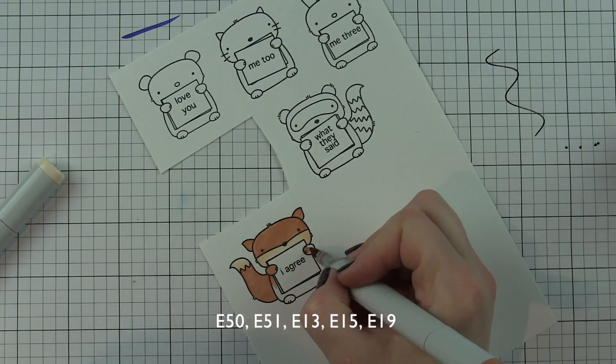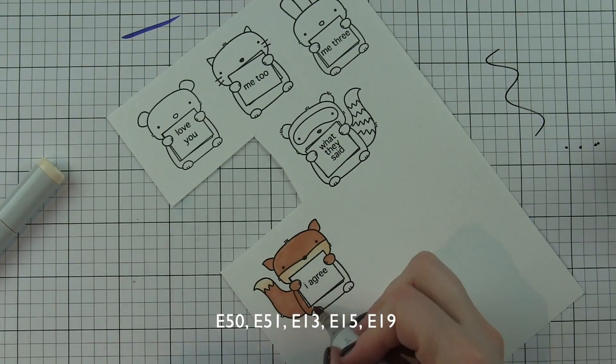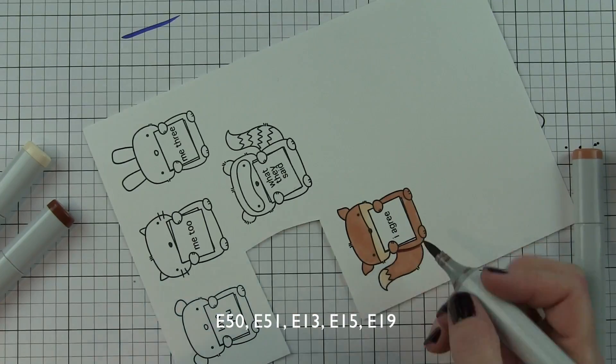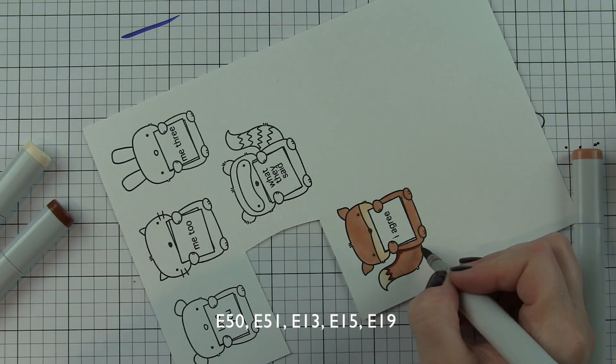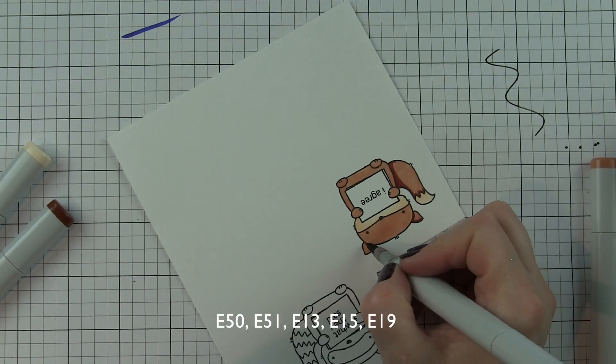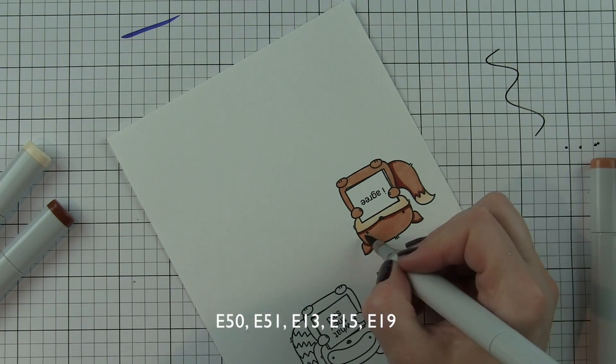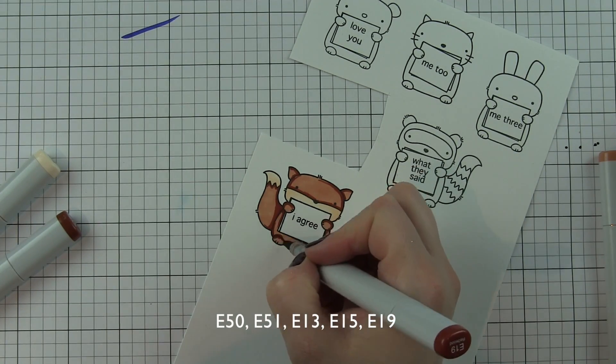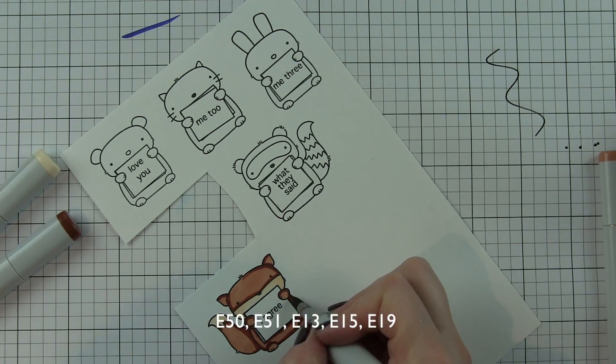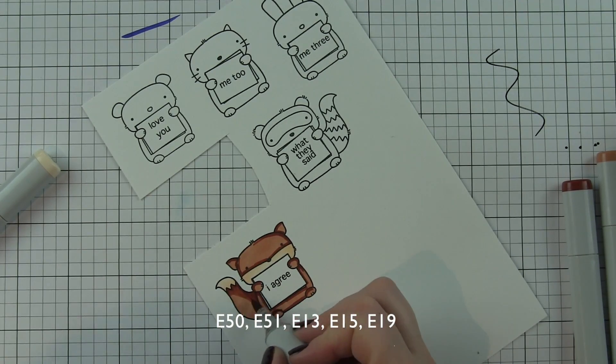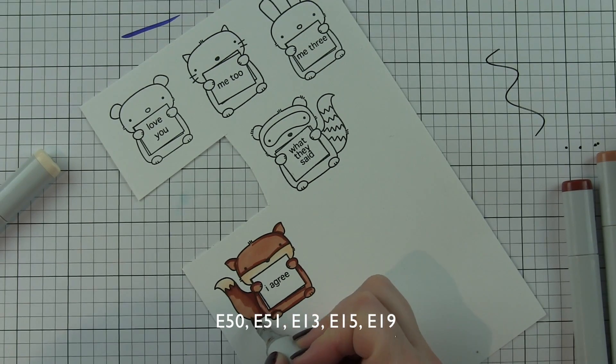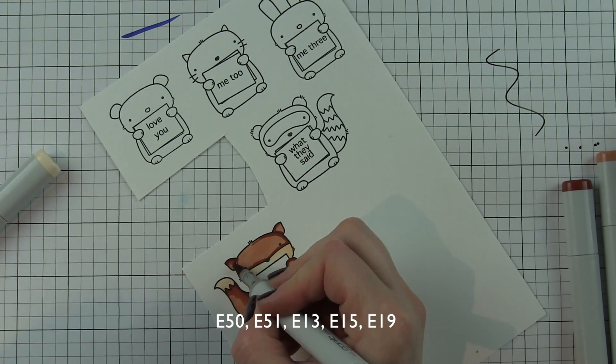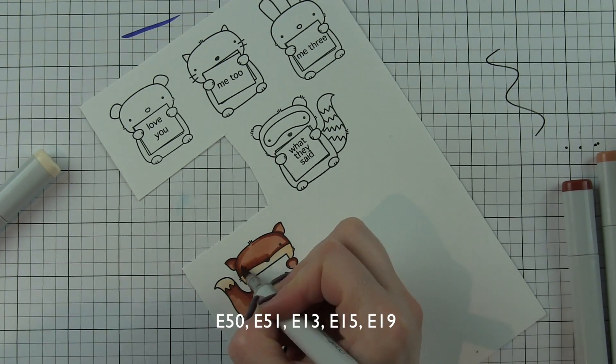I've gotten some questions lately regarding what cardstock I use for Copic coloring. I am a huge fan of the Neenah solar white cardstock. I have transitioned from the 80 pound weight to the 110 pound weight - it's just a little bit more sturdy. Anytime I am doing Copic coloring of any sort, that is the cardstock I'm using.